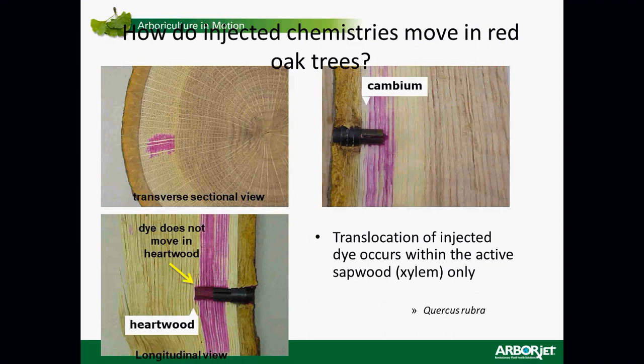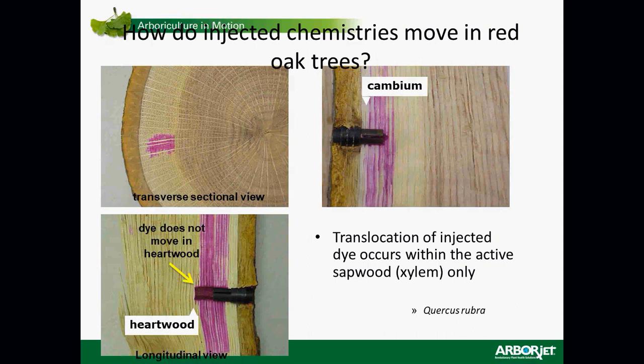An illustration shows a transverse cross-section of a red oak where a hole was drilled into the heartwood and red dye was injected. The heartwood is inactive and doesn't move product — so drilling deeper is not always better. Know your species. With resinous conifers, the injection must be performed quickly and at high pressure to prevent resin flowing into the injection hole and equipment. Some work done in Korea showed that injecting conifers when temperatures drop reduces resin flow and application goes more rapidly — something we are also investigating.